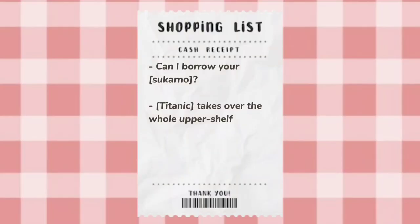Name and Referring. In referring to something, people can also use names. For example: 'Can I borrow your Soekarno?' or 'Titanic takes over the whole upper shelf.' When I say 'can I borrow your Soekarno,' it doesn't mean borrowing the real person Soekarno, because he has already passed away. But when the name Soekarno is associated with 'borrow,' the listener can infer something else — not a human named Soekarno, but his biography book. The same goes for 'Titanic takes over the whole upper shelf' — it's not the Titanic ship, but a Titanic book, because Titanic is associated with upper shelf.